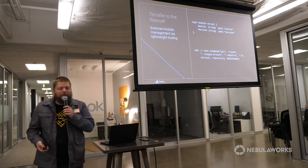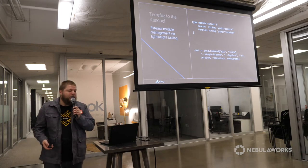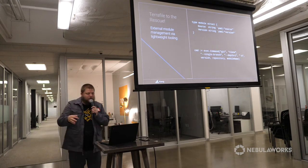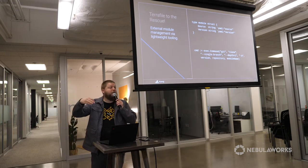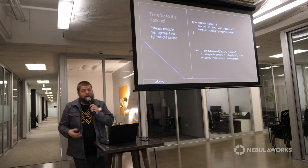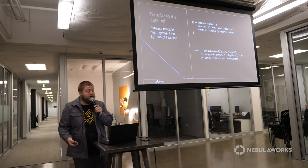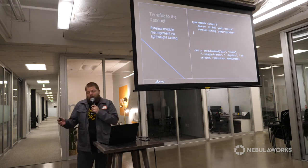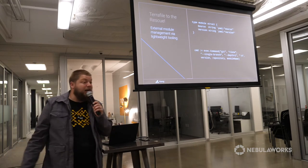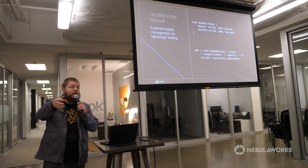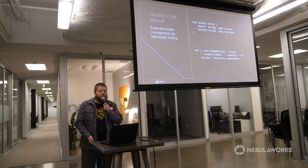We found a tool called TerraFile, a really simple binary written in Go, comprised of two main parts: a definition for a module to pull from a remote location — the source, like a pointer to GitHub — and a version member, which is just a string: a SemVer tag, a particular commit ID, or a branch ID. Under the hood, it's just a git clone to the repo you give it with a given name and version tag. It's a simple, straightforward tool.